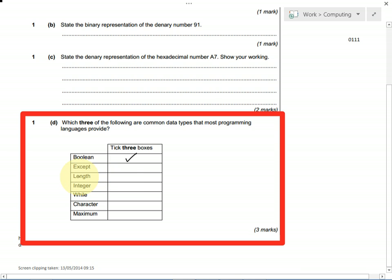Integer means a whole number, so a number that isn't a half or a fraction or anything like that. While you'd use when you're programming to make something happen again and again, but it's not a data type.